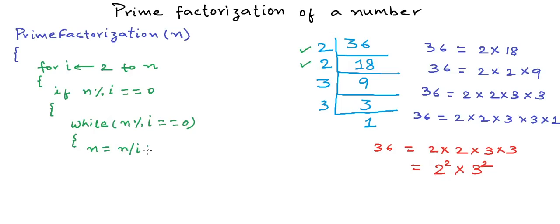We also need to know the frequency of i in the prime factorization, so we need to count how many times we are able to divide. Outside the while loop we initialize a variable count, and inside the loop we increment count.